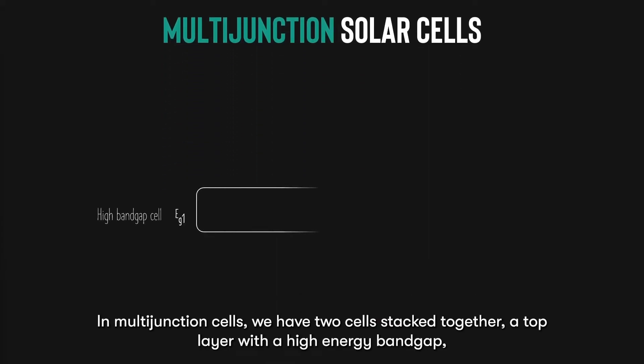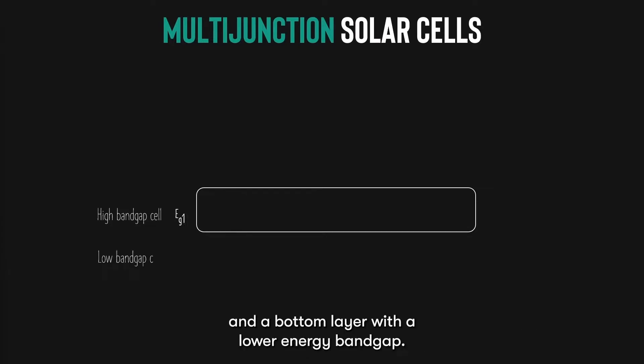In multi-junction cells, we have two cells stacked together, a top layer with a higher energy band gap, and a bottom layer with a lower energy band gap.